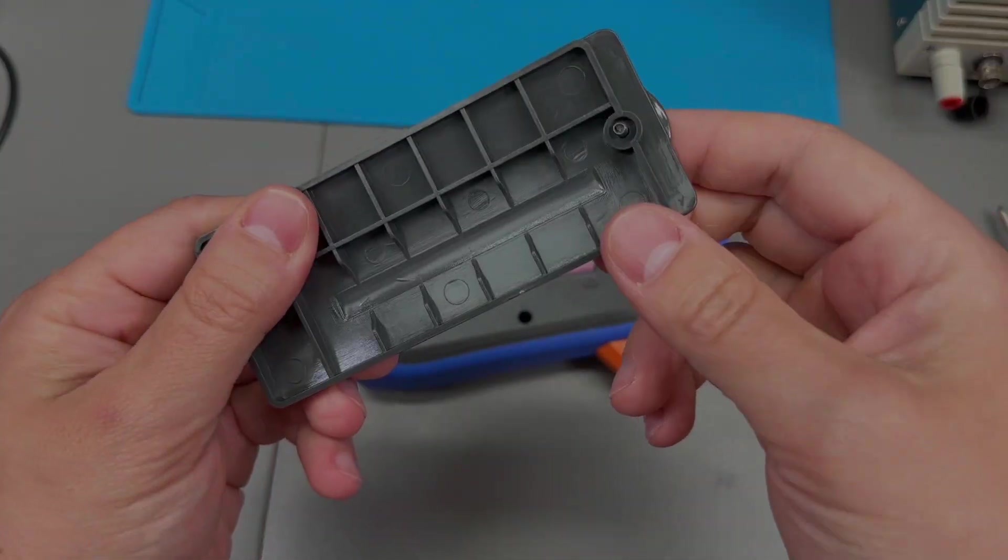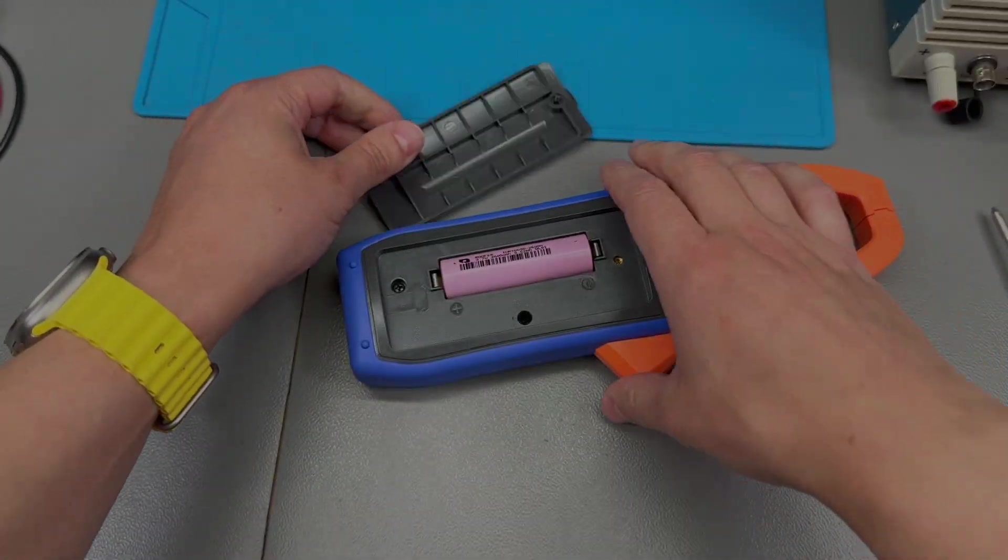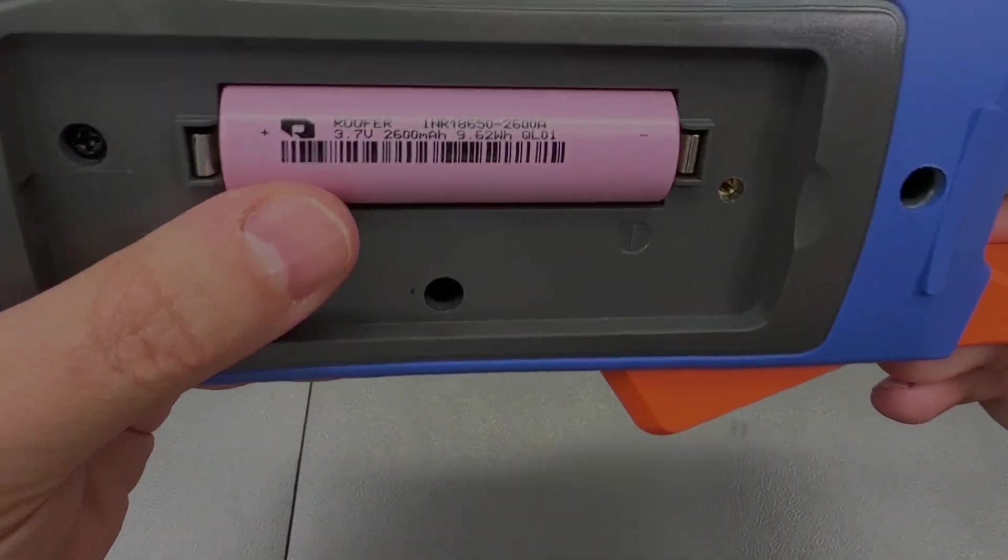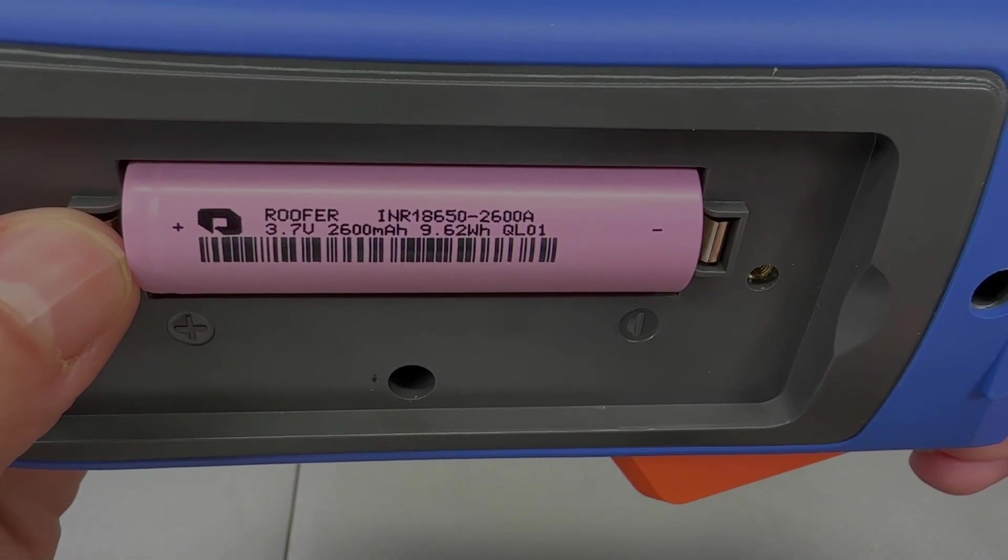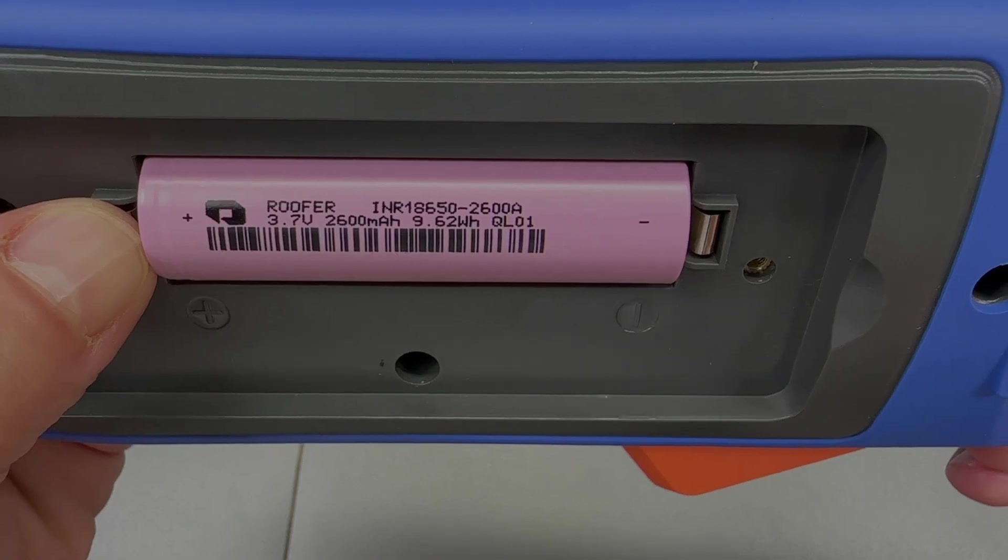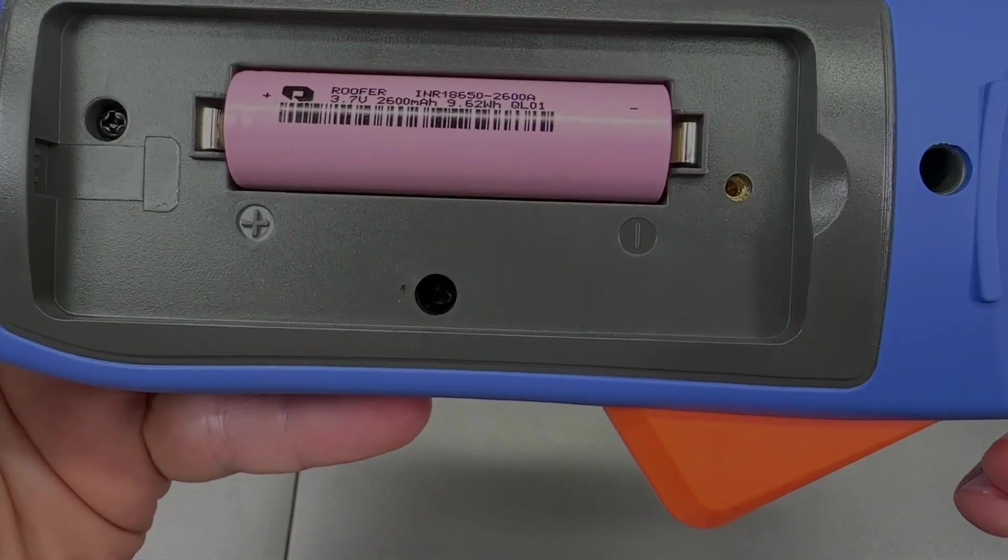The screw on the battery cover is nicely retained so you won't easily lose it. And this is the 18650 cell inside, it's a 2.6 amp hour cell.